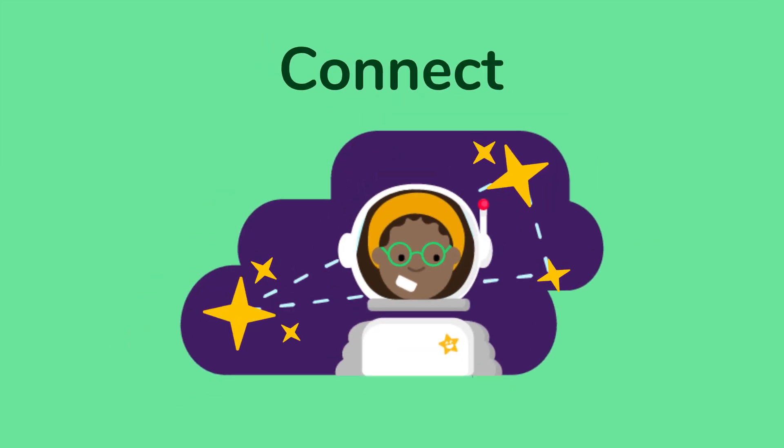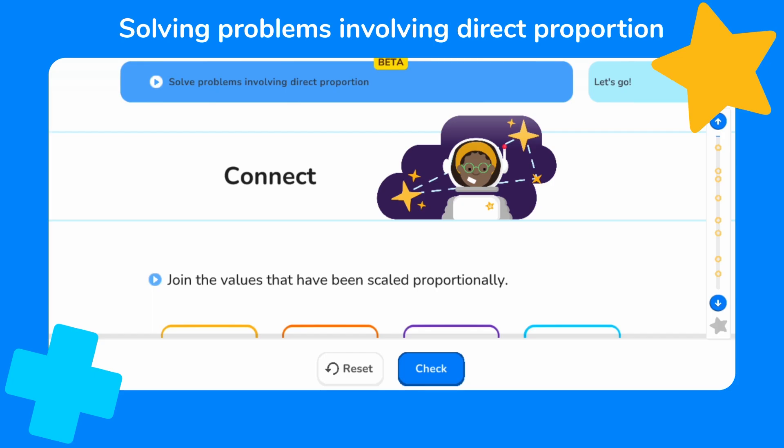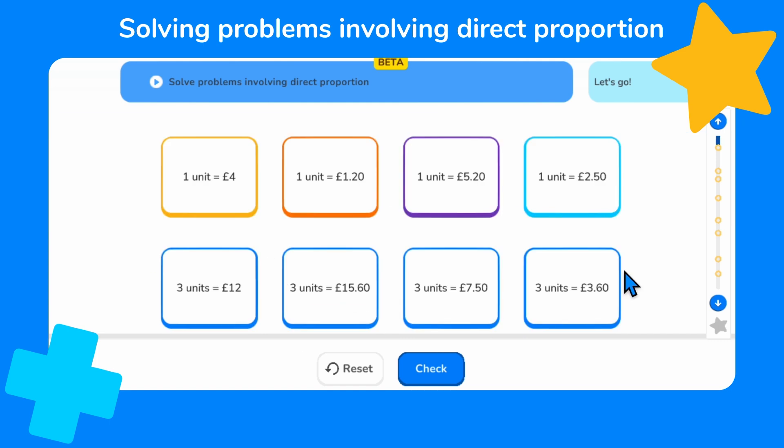First, let's connect what we already know, which will help us with the rest of this lesson. We're going to do that by joining the values that have been scaled proportionally. If one unit equals four pounds, we can multiply four pounds by three to find the cost of three units. Four times three equals twelve, so three units must cost twelve pounds.